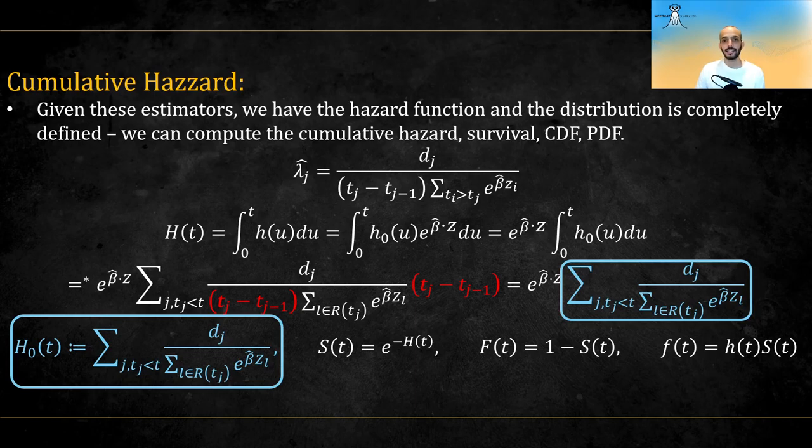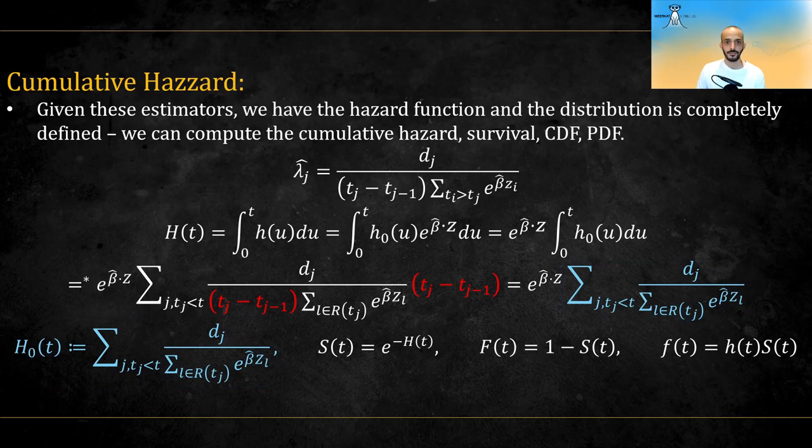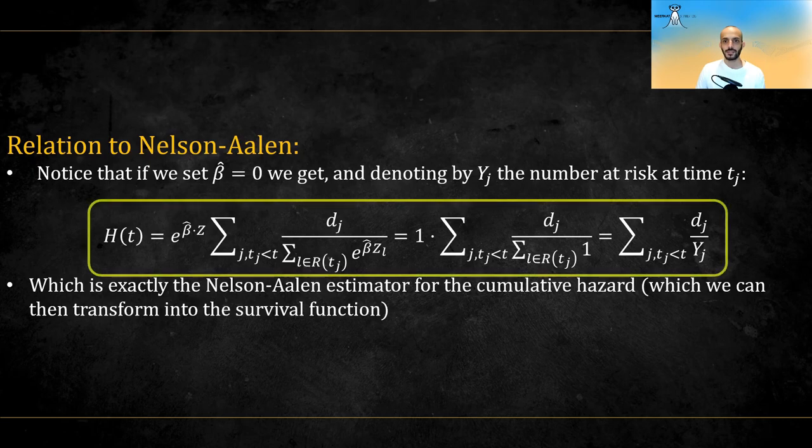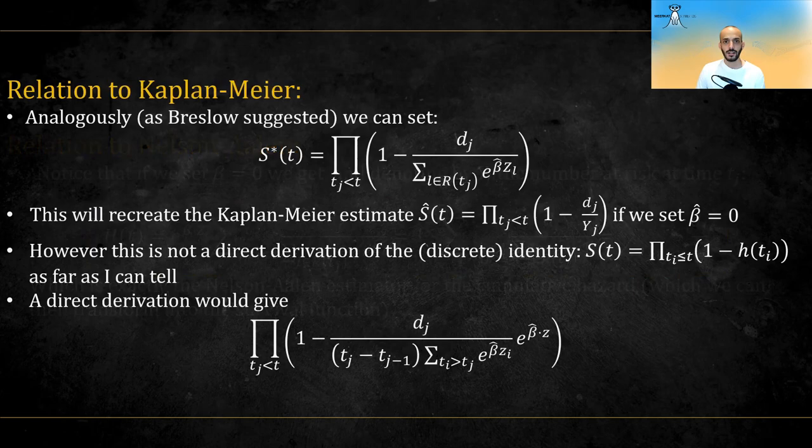We can now calculate the nonparametric survival CDF and PDF functions. Finally, notice that if we take beta to be equal to zero and denote by y j the number at risk at time t j, we get that the cumulative hazard is equal to this, which is exactly the Nelson-Allen estimator for the cumulative hazard, which we can also transform into a survival function.